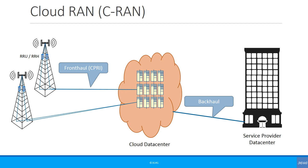The C-RAN architecture evolves further to cloud RAN — also called C-RAN, just to confuse everyone. In cloud RAN, instead of physical BBUs in a central location, the BBUs become software or virtual functions that can be placed in some kind of cloud, so you don't need a physical data center. Even the service provider data center functions can be split — some physically on-premises, some in the cloud.